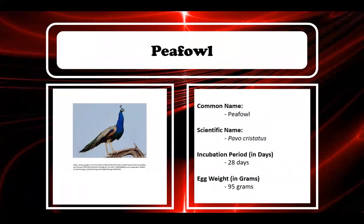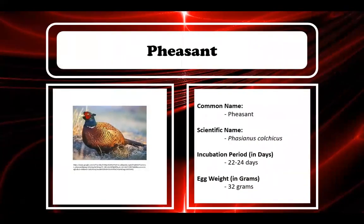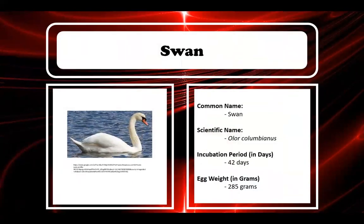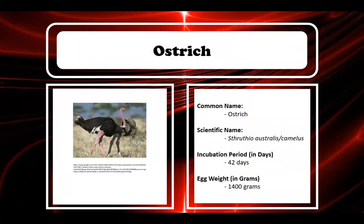Peafowl: scientific name Pavo cristatus, incubation period 28 days, egg weight 95 grams. Pheasant: scientific name Phasianus colchicus, incubation period 22 to 24 days, egg weight 32 grams. Swan: scientific name Olor columbianus, incubation period 42 days, egg weight 285 grams. And last, ostrich: scientific name Struthio camelus, incubation period 42 days, egg weight 1,400 grams.